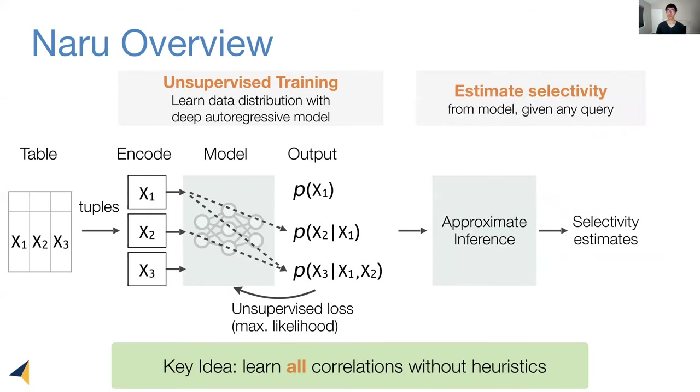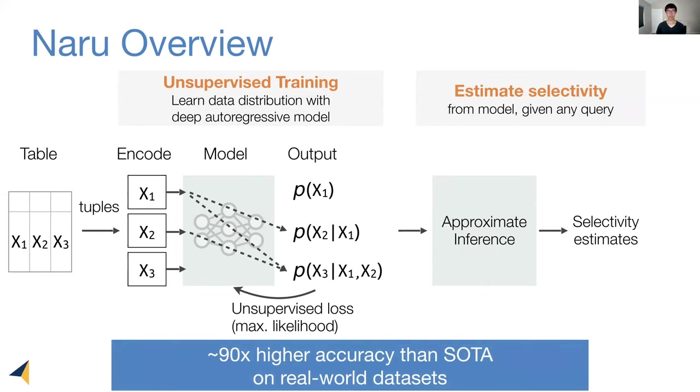After training, we can use the model to estimate the selectivity of any query. To handle challenging range queries, we perform approximate inference, which will return a selectivity estimate, which we can turn into a cardinality by multiplying with a row count. By combining these ingredients, Naru can achieve up to two orders of magnitude higher accuracy than prior state-of-the-art.